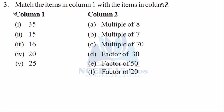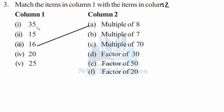Match the items in column 1 with the items in column 2. We will do this using column 2. For 'multiple of 8,' we will just read the table of 8: 8 times 1 is 8, so match it with the 3rd item. Similarly, 7 times 5 is 35, so it is in the first item. We will match B with 1.